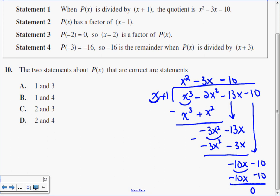So when p of x is divided by x plus 1, the quotient is, in fact, x squared minus 3x minus 10. So statement number 1 is true. So I know that c and d are not the options.